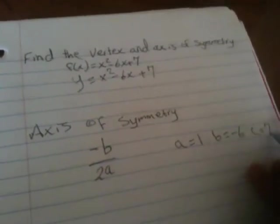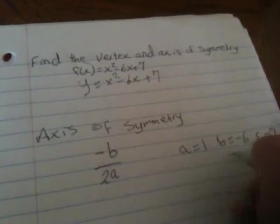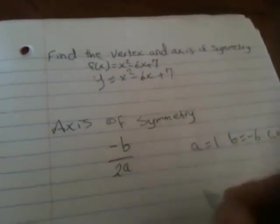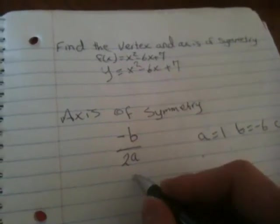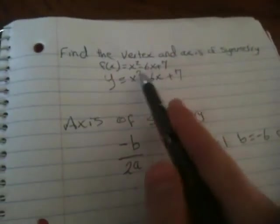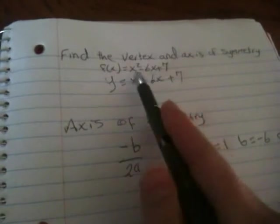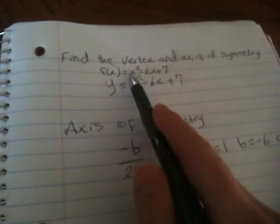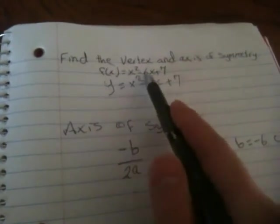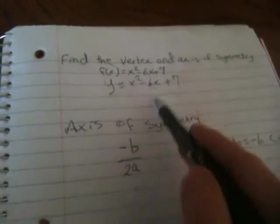We don't need c, just b and a. We apply these numbers to our formula. In x² - 6x + 7, the coefficient 1 is a, -6 is b, and 7 is c.